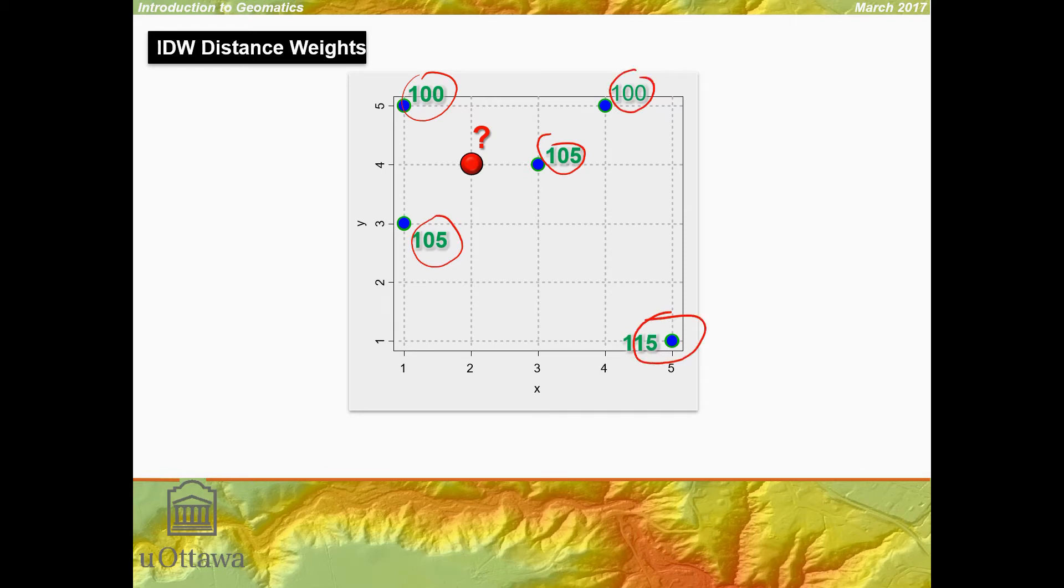Intuitively, if we're looking at inverse distance weights, the most influential points will be the ones closer. So this one, for example, will have more influence than this one down here. So 115, even though it's a larger number than 105, will contribute less of that 115 to the prediction or interpolated value here.